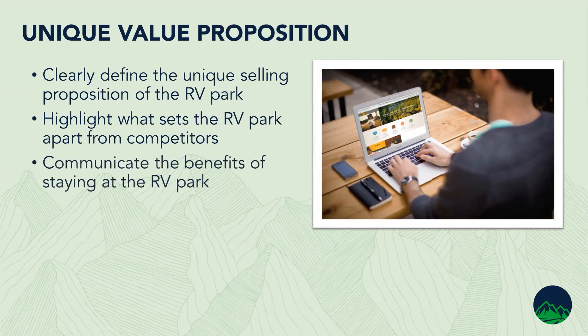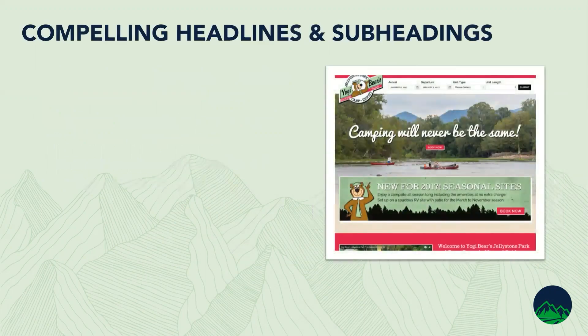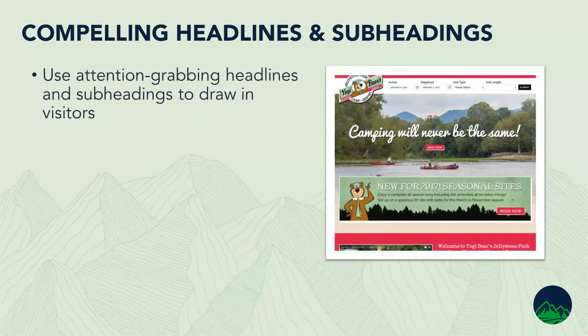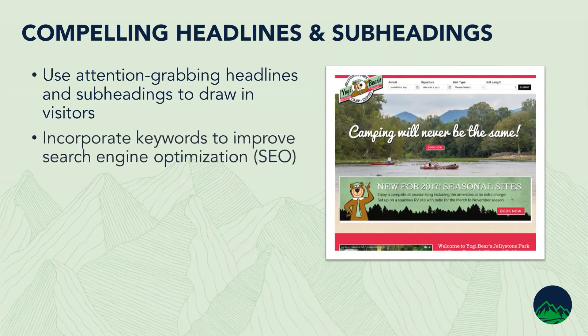You want to have compelling headlines and subheadings. The Yogi Bear example here — 'Camping will never be the same' — that's a pretty compelling headline. Use those types of things to grab attention and really draw people into what you want them to do. Right below that headline it says 'Book Now,' and you can see the design and branding consistency with the colors and the call to action. Incorporate keywords to improve search engine optimization within your SEO — you can use the town you're in or attractions in your headlines, which will help you be found more easily.